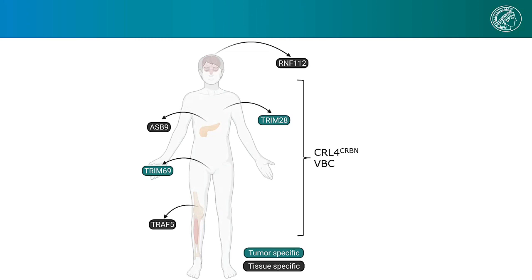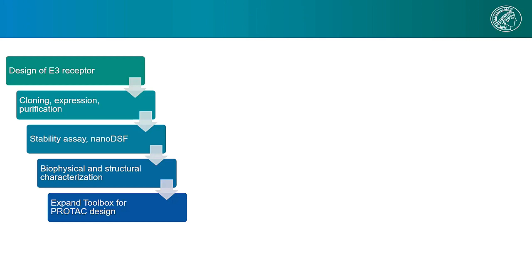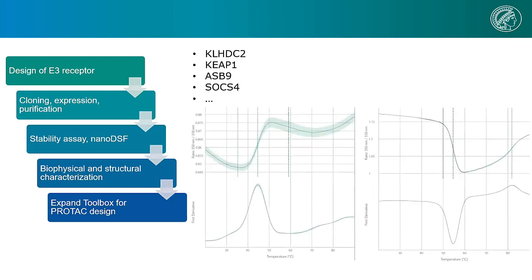A big focus of the field right now is the characterization of novel E3 ligases. Our general approach starts with construct design of E3 substrate receptors — especially interesting are disease-associated E3s. After cloning, expression and purification, we usually start by assaying them for their stability. As you can see for two of these substrate receptors, we obtain two stable proteins: one melts around 45 degrees Celsius and the other, which is a little more stable, at 55. Moreover, the left one shows a red shift in the nanoDSF, whereas the right one shows a blue shift.